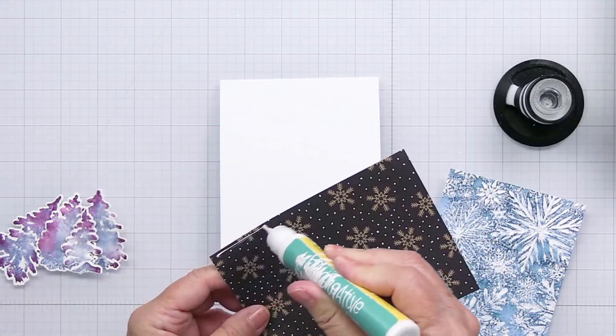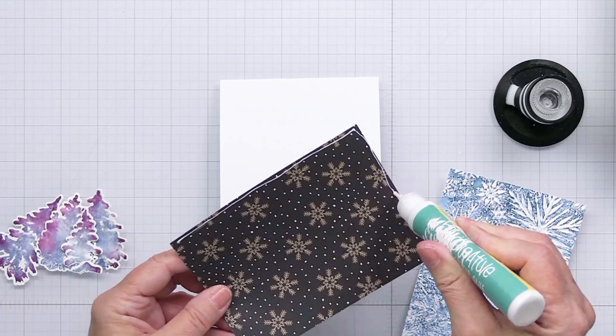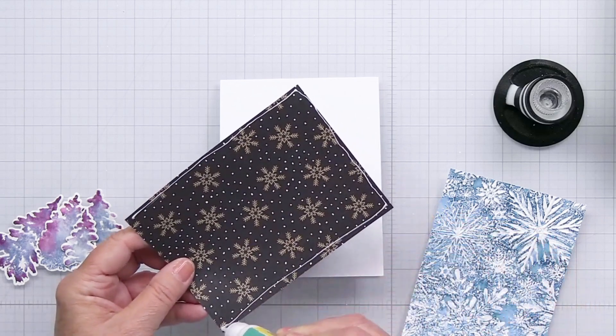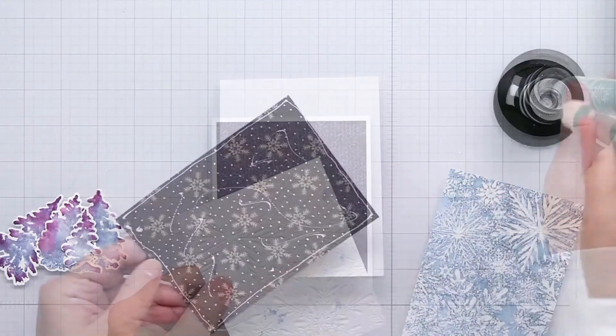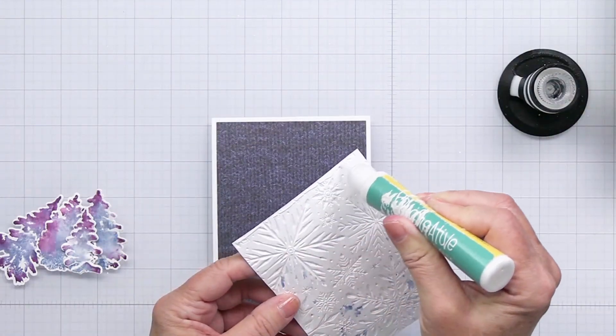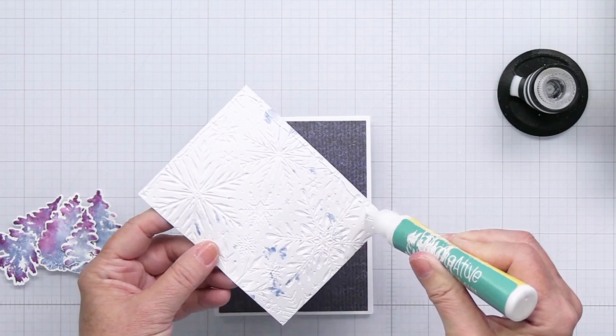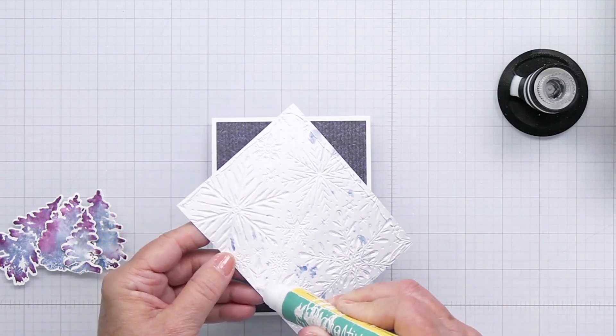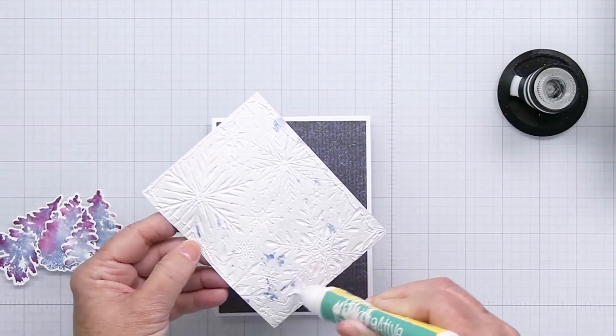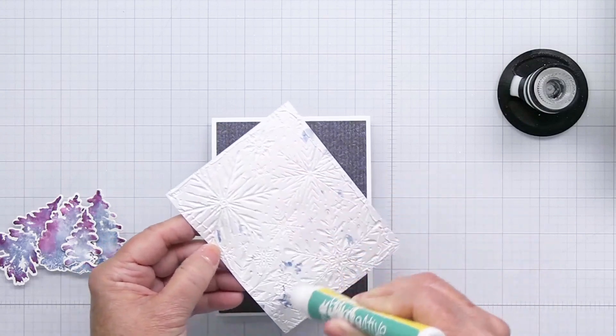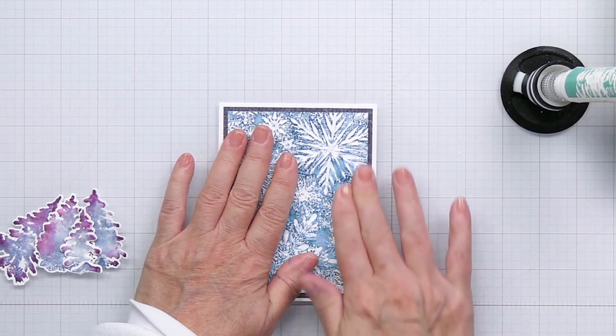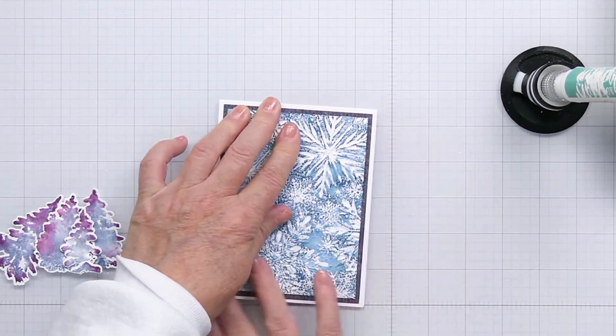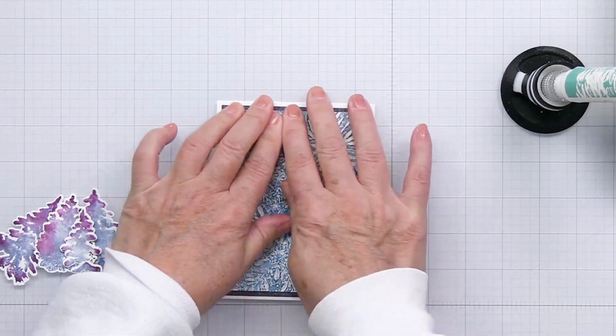Now I'm just going to start to assemble the project. I'm going to use my Honey Bee liquid adhesive here on this pattern paper piece. I'll put a little bit all the way around the perimeter and then a bit in the center and get that adhered onto my A2 size top folding white card base. Then I'll do the same thing with the embossed paper with my Honey Bee liquid adhesive. I'll give that a really good press so that all of those layers are really nicely adhered, especially right around the very edges of the paper.